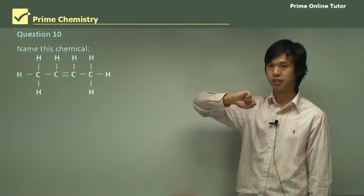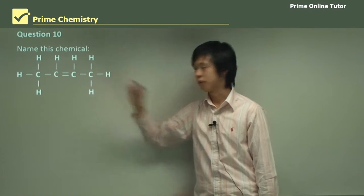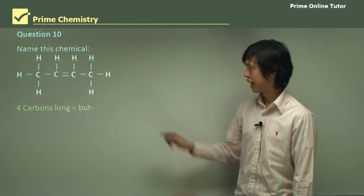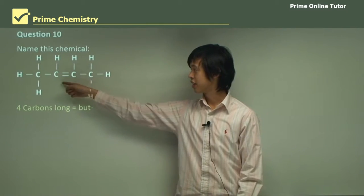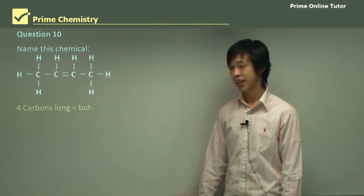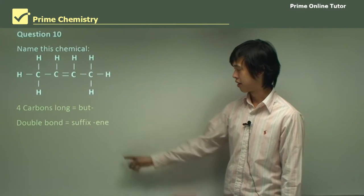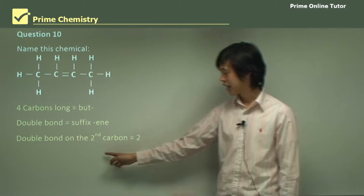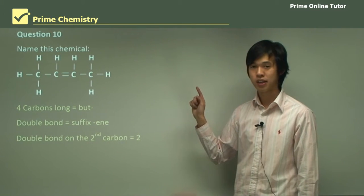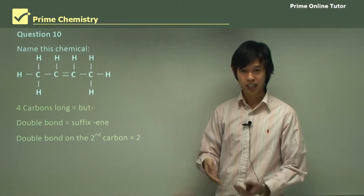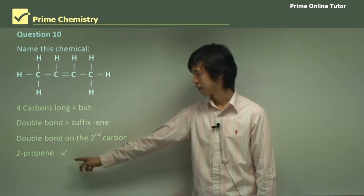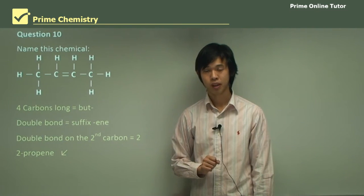Let's name this chemical. First, count the carbons: one, two, three, four — so there are four carbons, which means the prefix is "but". Looking at the bond structure, there's one double bond, which means it's an "-ene" group. The double bond is on the second carbon, so there must be a "2" in front — giving the name but-2-ene.